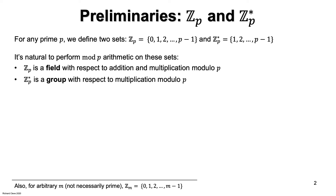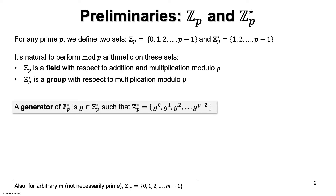Z*P is a group with respect to the operation of multiplication. By removing 0 from ZP, every element has a multiplicative inverse, which is needed in order to have a group. An element G of the group Z*P is called a generator of the group if the set of all powers of G is the group.